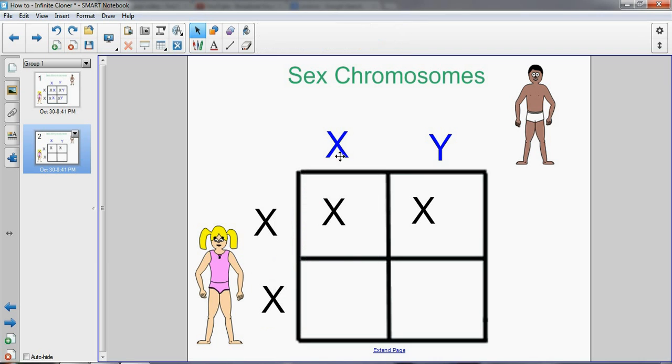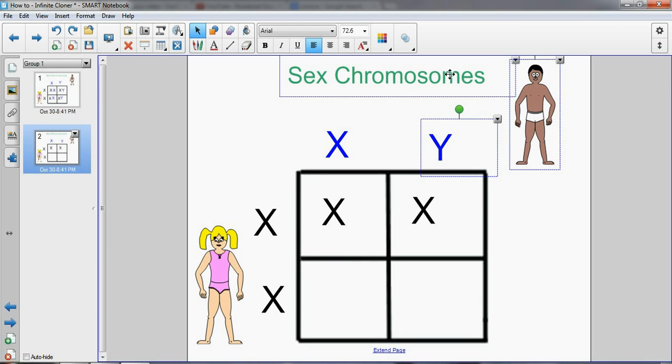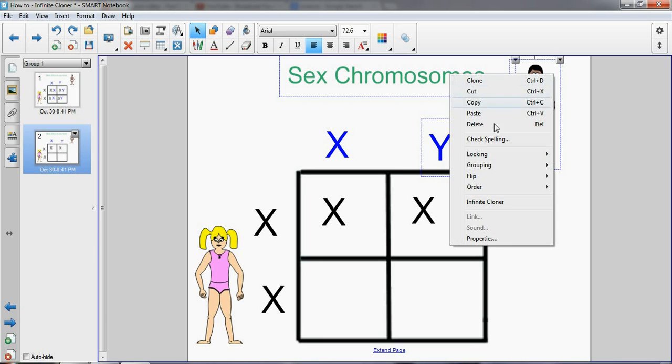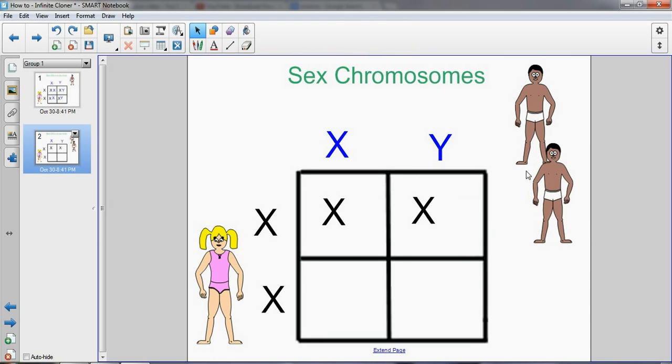You would do this for all the other objects, or we can even select multiple objects. Right-click, go to infinite cloner, and now you can make clones of everything, all the objects. Thank you for watching. I appreciate your support.